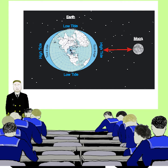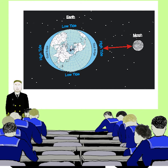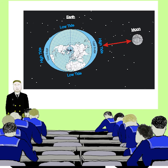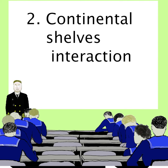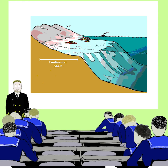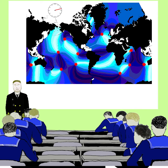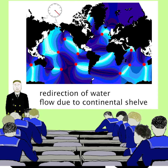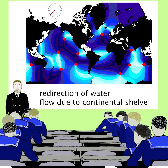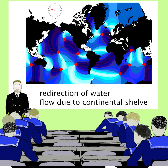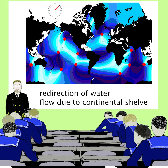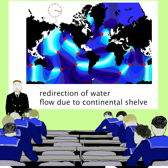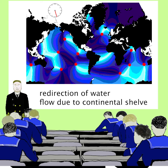As Earth rotates, these bulges move around the globe, generating tides and contributing to ocean currents. 2. Continental shelves and landmasses also significantly influence marine currents. When tidal bulges encounter these shallower areas, water flow can be redirected, altering current patterns. The shape of ocean basins and the presence of continents are crucial in determining current directions and strengths.